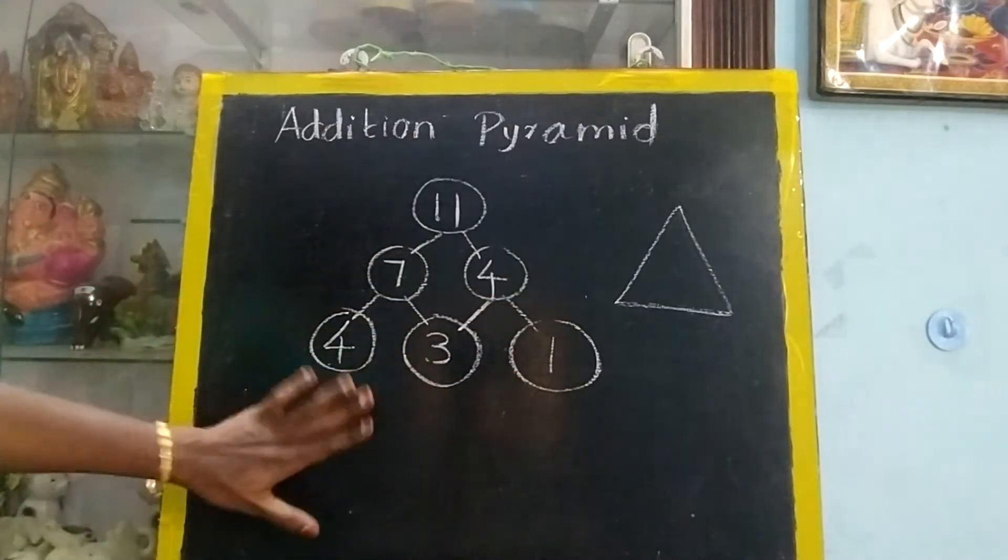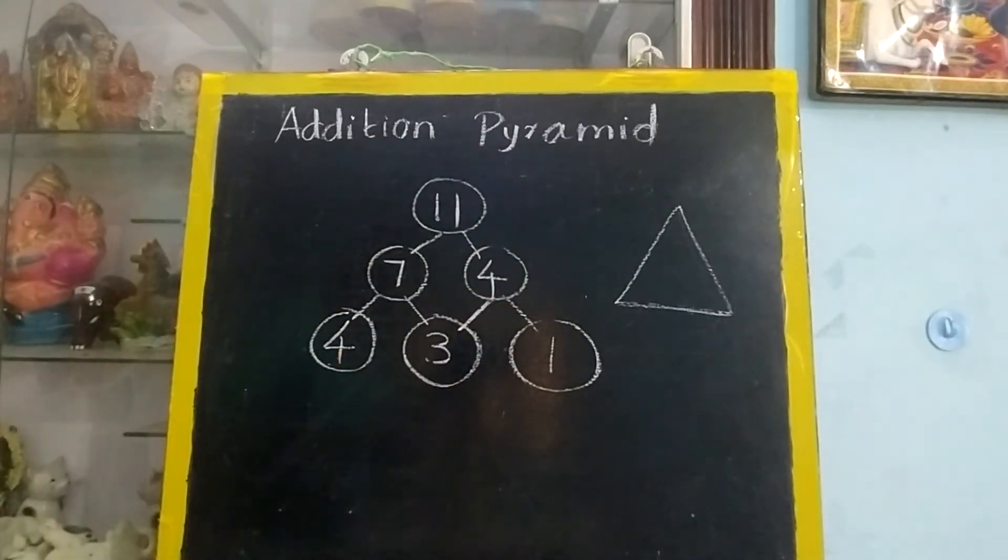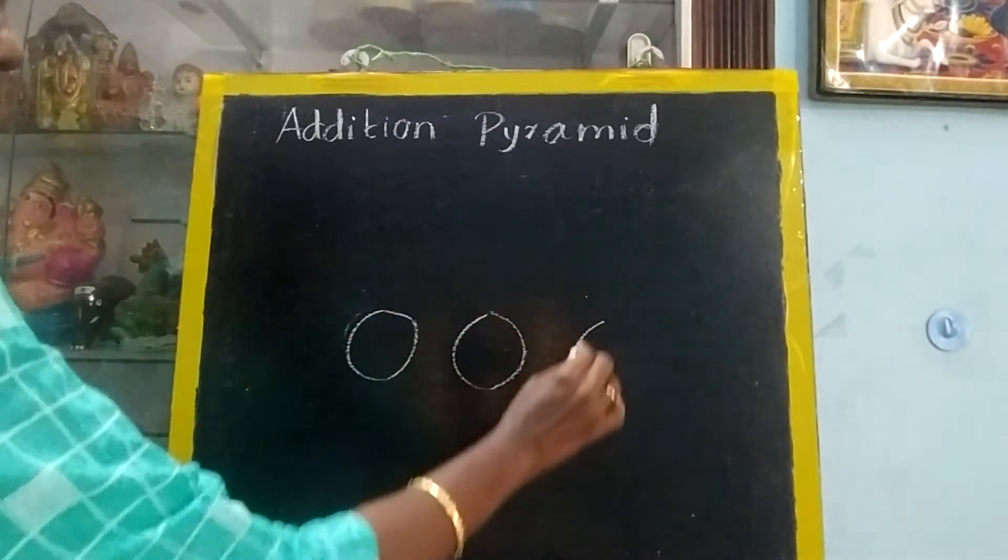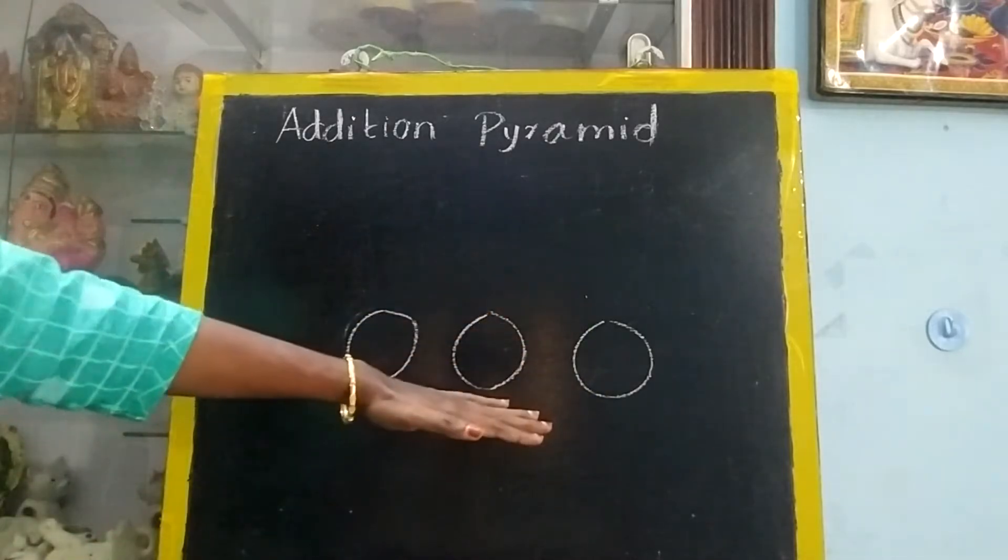So your addition pyramid is ready. Like this, I will teach you how to draw also. First thing you have to draw three circles. 1, 2, 3. You have to start from little down.